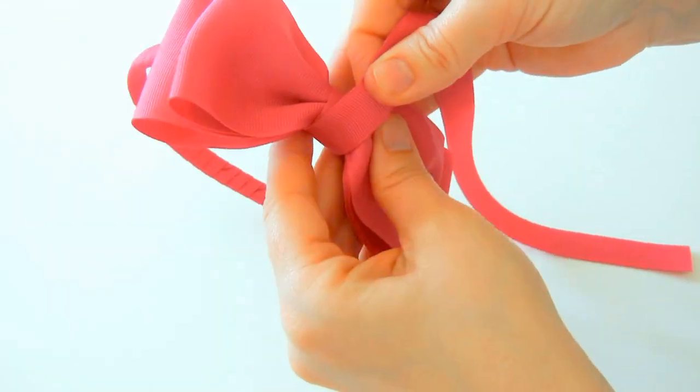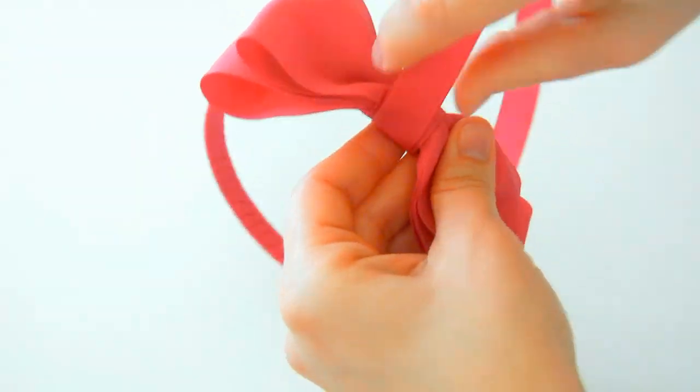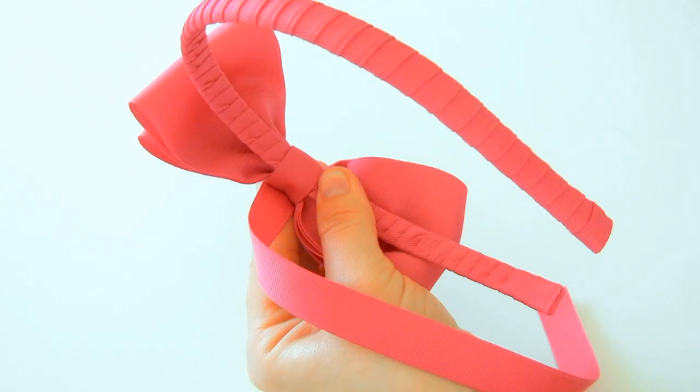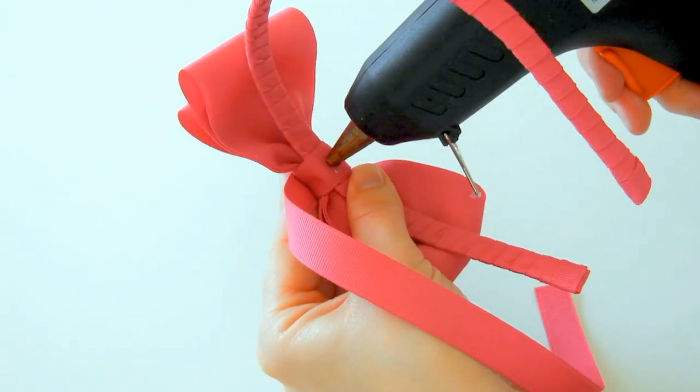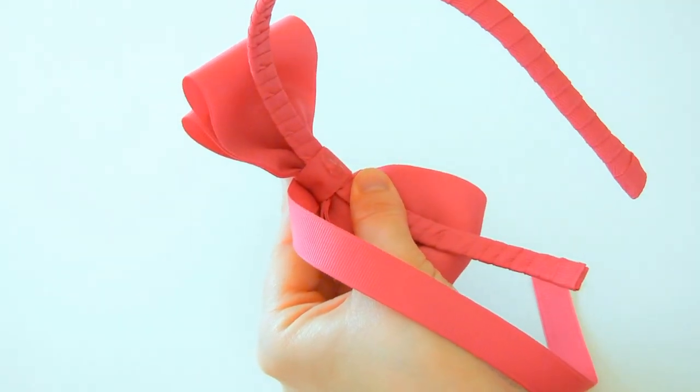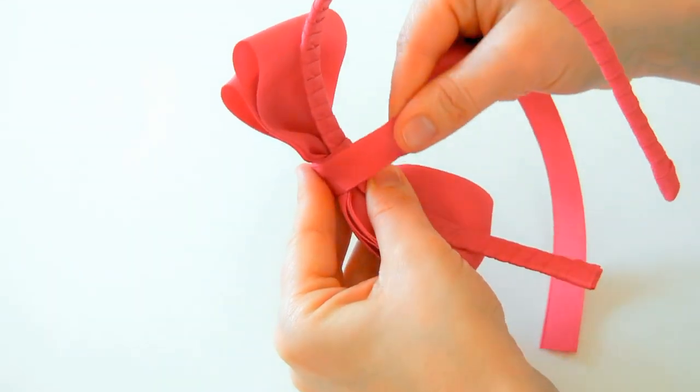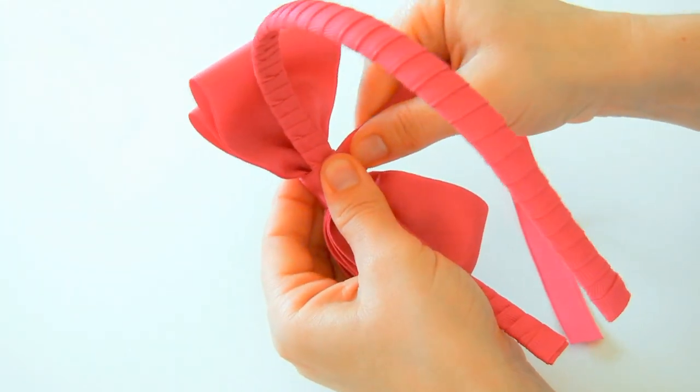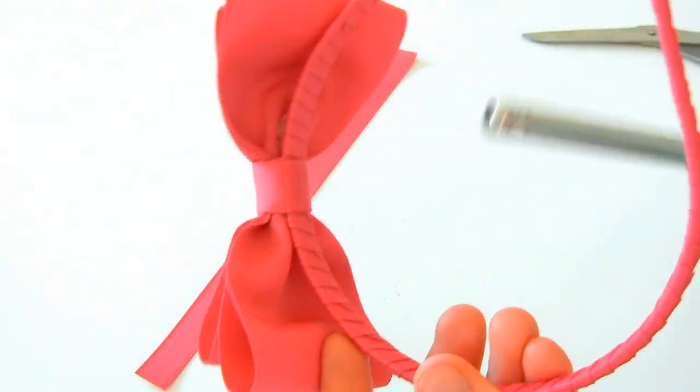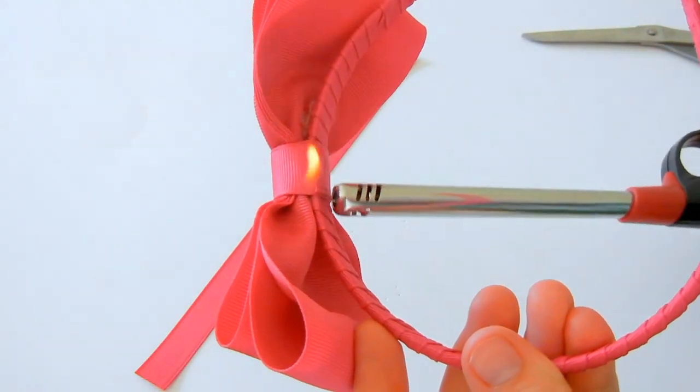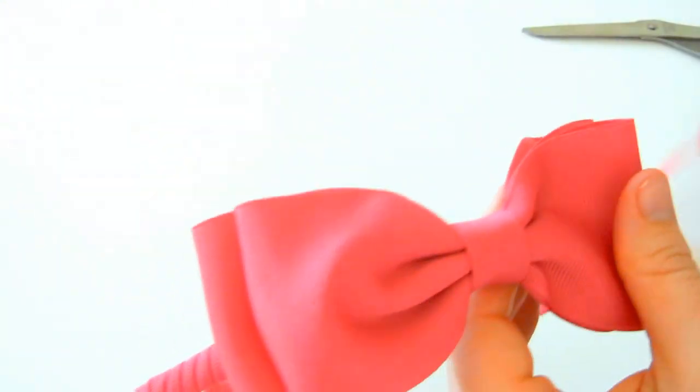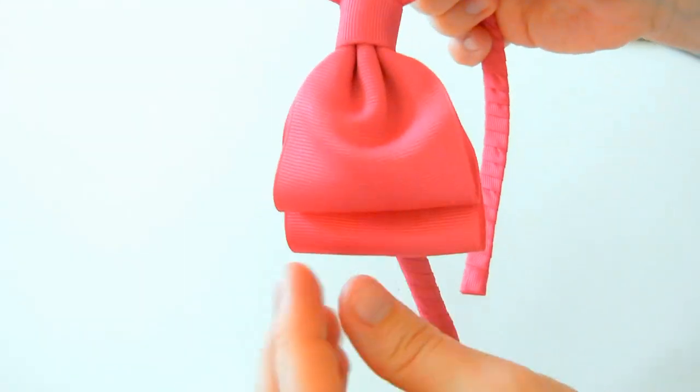You can wrap it just once if you'd like. Sometimes if you wrap it twice it gives it a more finished look though. Then place your hot glue in the middle and bring it over. Cut that off and seal your ends. That finishes this portion of the video.